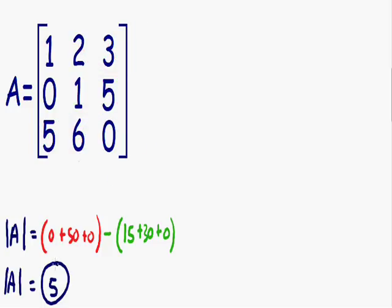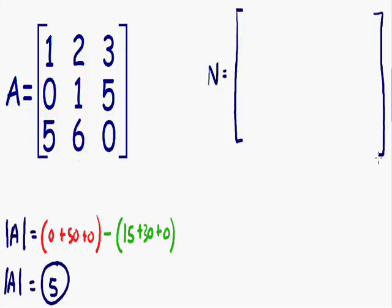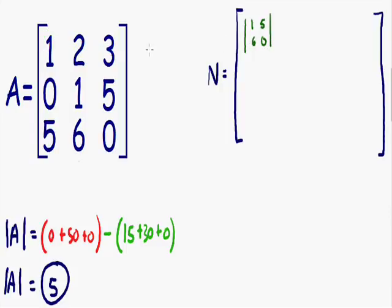After we find our determinant, we have to find what I like to call a new matrix — let's call it matrix N. For each number in matrix A, if we cross out the row and the column of that number, we're left with a 2 by 2 matrix. We copy that 2 by 2 matrix into the corresponding position of matrix N. We need to do the same exact thing for every number in matrix A.